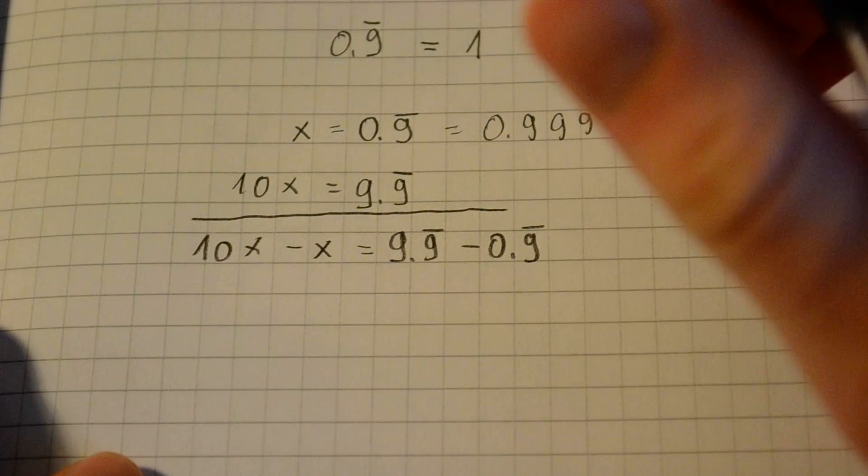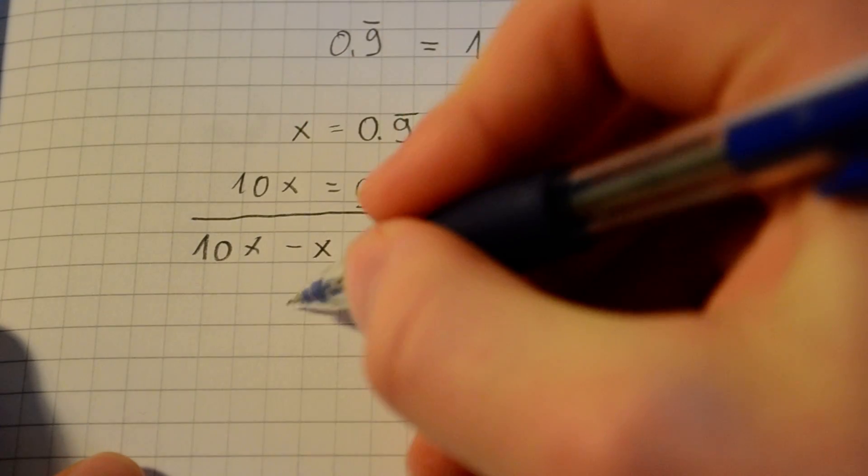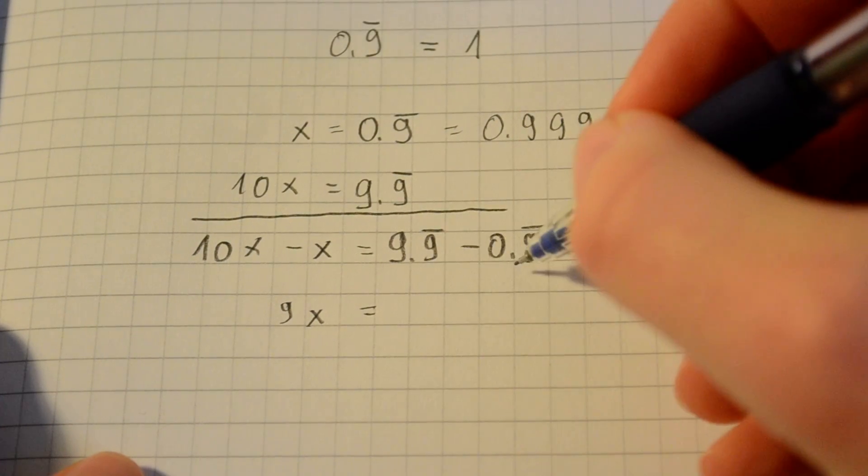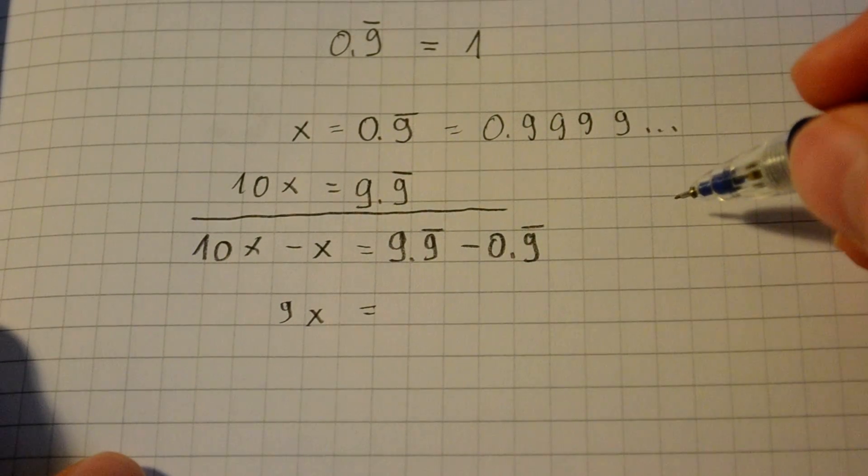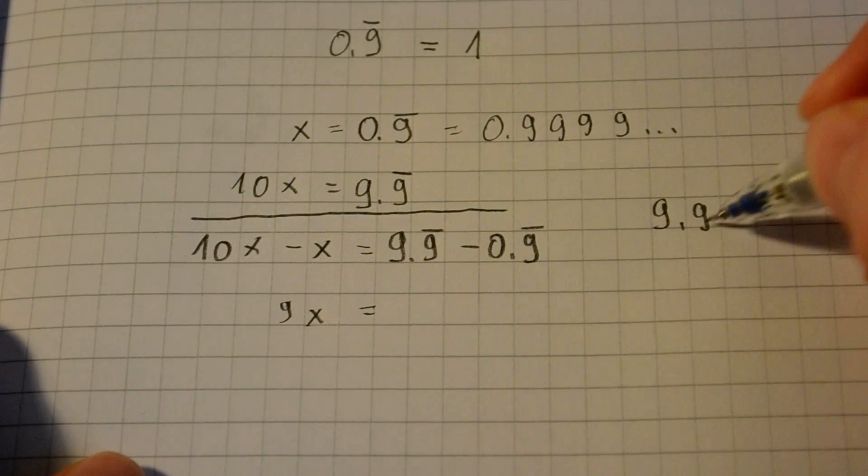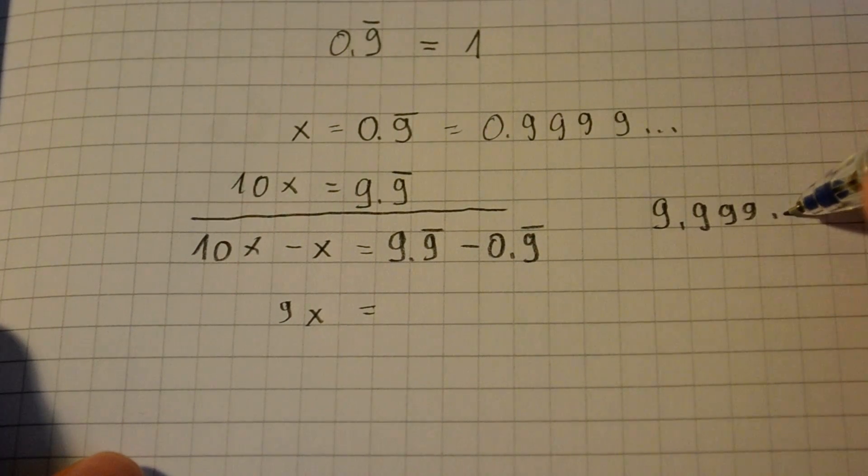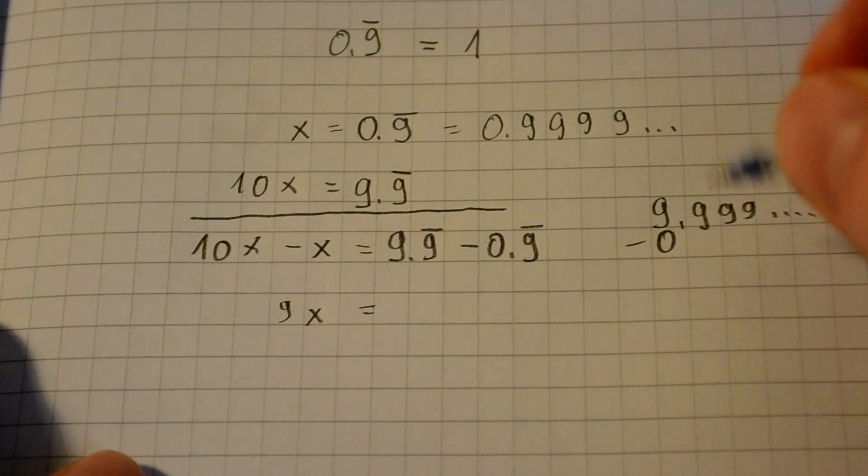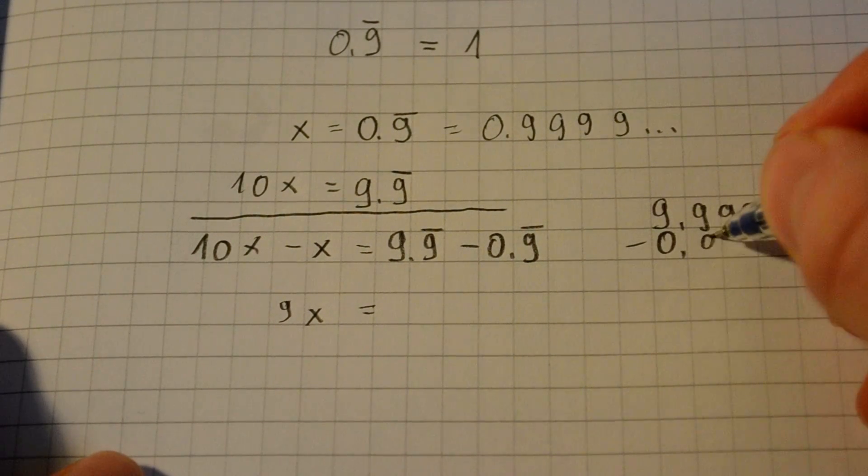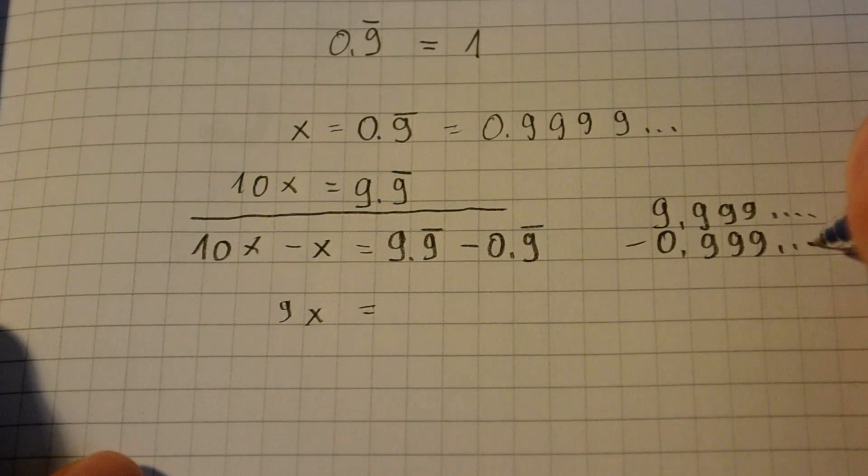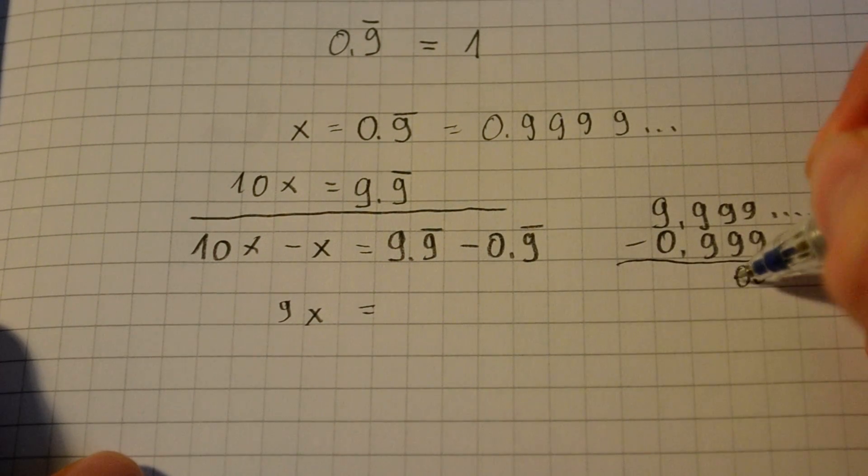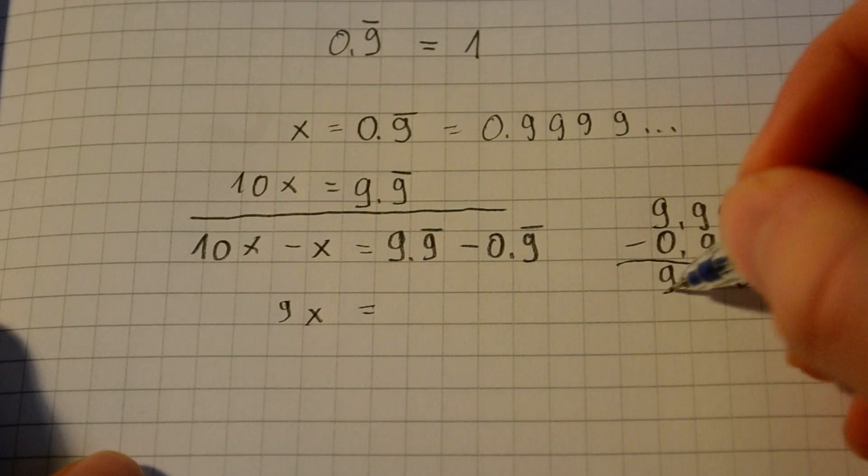And I think you know where this is going. So let me just calculate that here: 9.999... going on forever, minus 0.999... going on forever. That is 9.000...